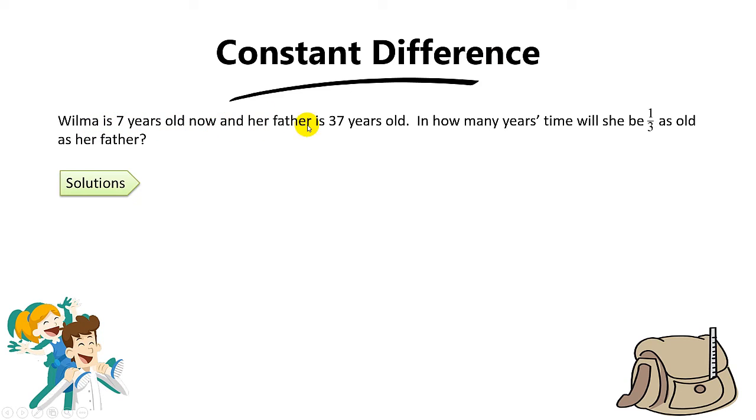Wilma is 7 years old now and her father is 37 years old. In how many years time will she be one third as old as her father?